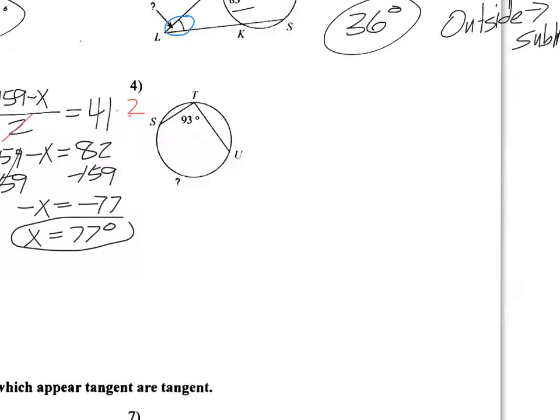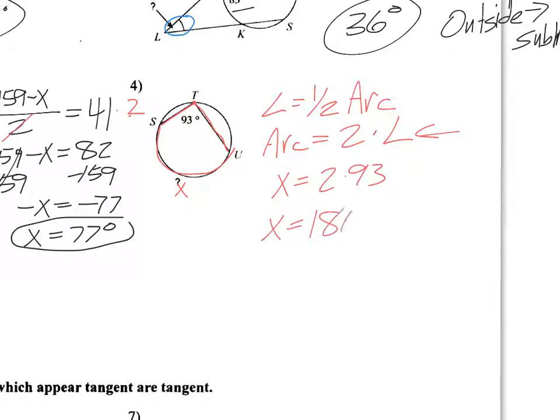Okay, where is this angle? Well, this angle, the vertex, is on the circle. So remember, this is an inscribed angle. So the angle is half the arc. Or we said the arc is two times the angle. In this case, I'm looking for the arc from here to here. So I'm going to use this second equation. So x is going to be 2 times 93. So x is 186.